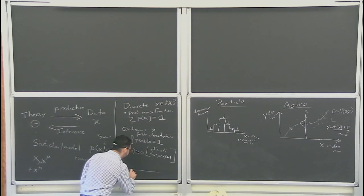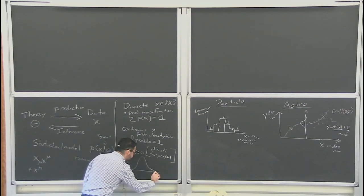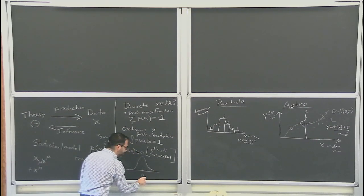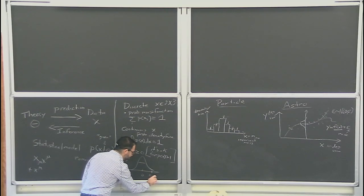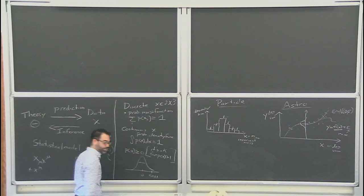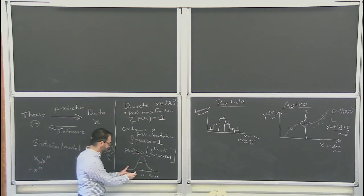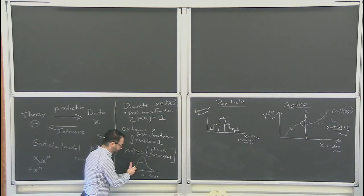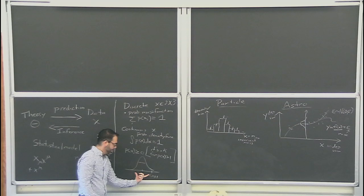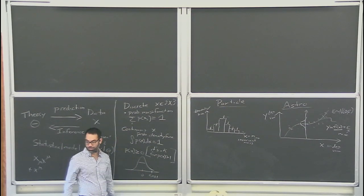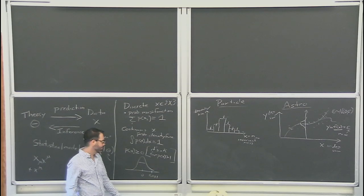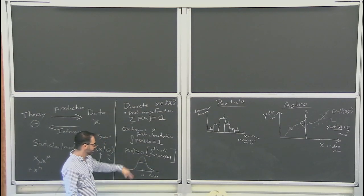For example, if I have a Gaussian distribution centered at zero with a standard deviation of 0.001, when I integrate across there the X part of the integral is some tiny number, so the density is going to have to be very, very tall — much bigger than one — for it to integrate to one. So that's the probability density function.